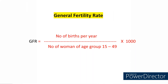Coming to General Fertility Rate or GFR, it is equal to number of births per year in the numerator — which is the same — but in the denominator, instead of total mid-year population, here we take number of women of age group 15 to 49, only the reproductive age group women, multiplied by 1000.